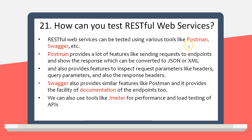Next question: how can you test RESTful web services? There are two ways: Postman and Swagger. Postman provides many features to perform REST operations — sending requests to endpoints, viewing responses in JSON or XML, and inspecting request parameters like headers and query parameters. Swagger provides all the same capabilities but additionally offers documentation generation for your REST API endpoints. We can also use tools like JMeter for performance and load testing.